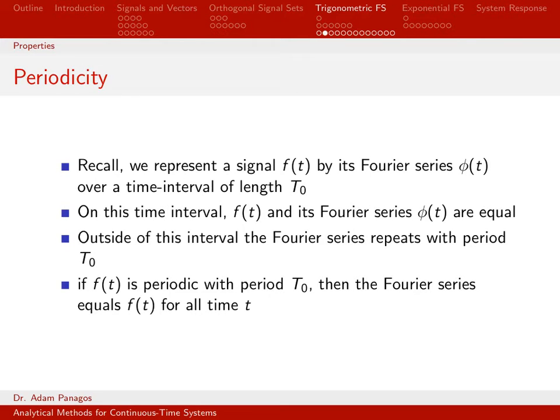What does that mean for us? That means if we are trying to represent a signal that is periodic with period T-naught, then the representation of that signal will be good for all time because the Fourier series representation is periodic with period T-naught. The signal is periodic with period T-naught. They match then for all time.